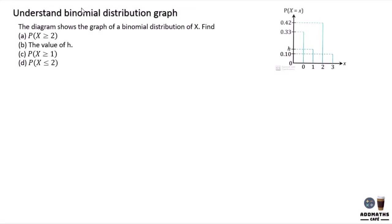Understand binomial distribution graph. This is a binomial distribution graph. It means that for the event to happen zero times, it will be 0.33 probability. For happening one time,